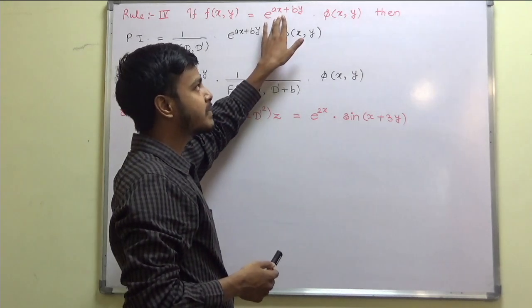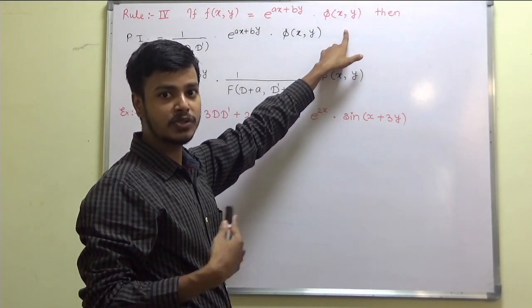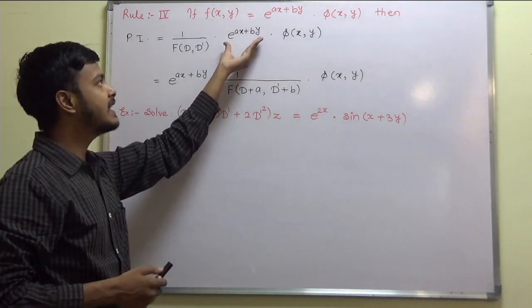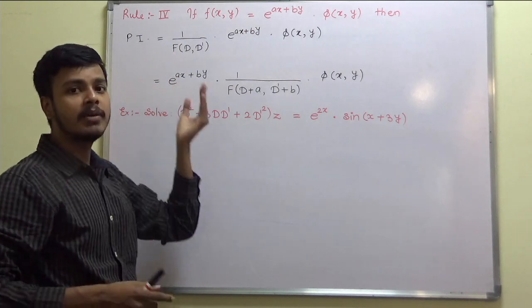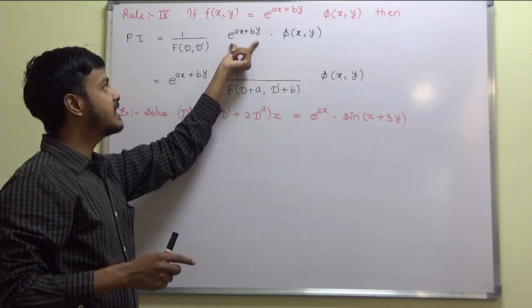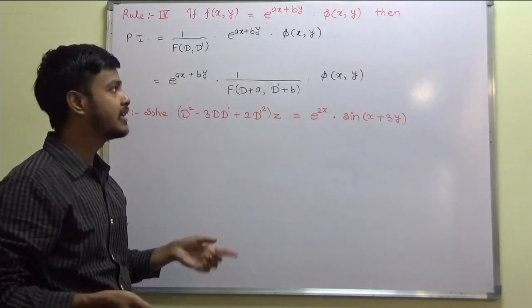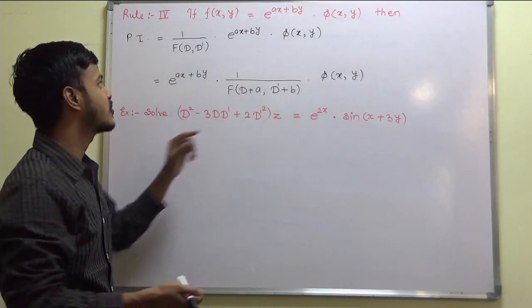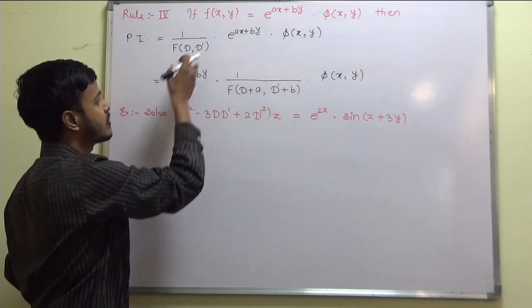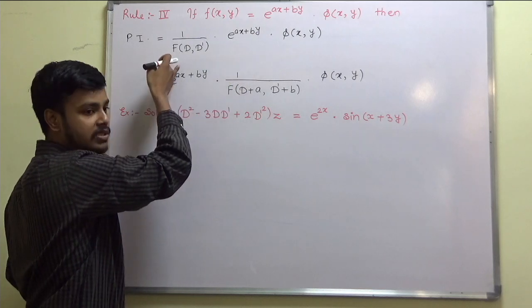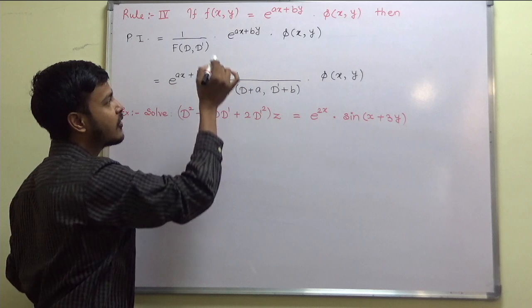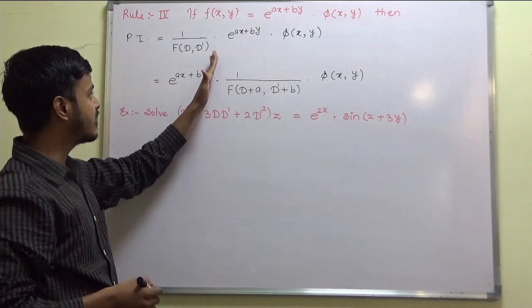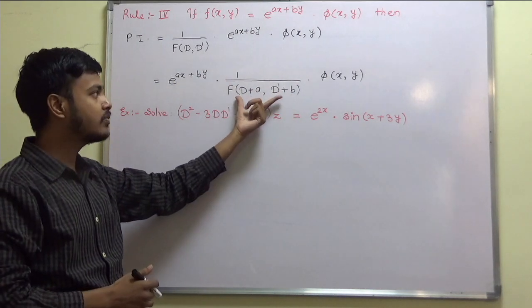So e^(x+vy) multiplied by φ(x,y), where φ could be x^m·y^n or sin/cos(x+vy). What you have to do in such a problem is take e^(x+vy) outside, but there is a condition — when you take it out, you pay a tax by applying an increment to D and D'. You increment D by the coefficient of x and D' by the coefficient of y. Then the problem continues as it is.